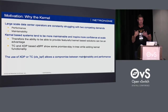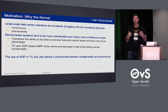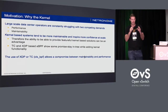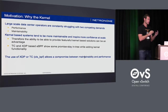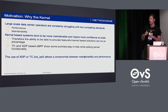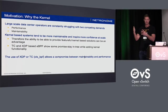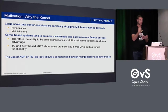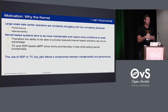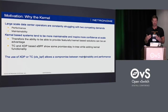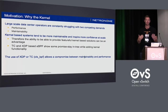TC and XDP-based eBPF give us the ability to add small programs into the kernel for this type of data plane development, which we haven't been able to do before. As Thomas said, it's the fastest thing he's been able to develop and move into the kernel. It gives us a huge amount of flexibility and a great compromise between maintainability and performance.